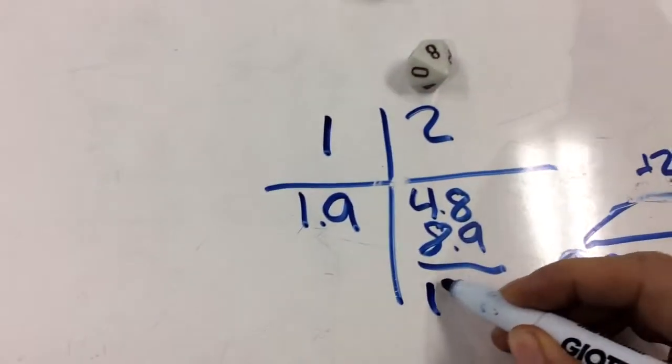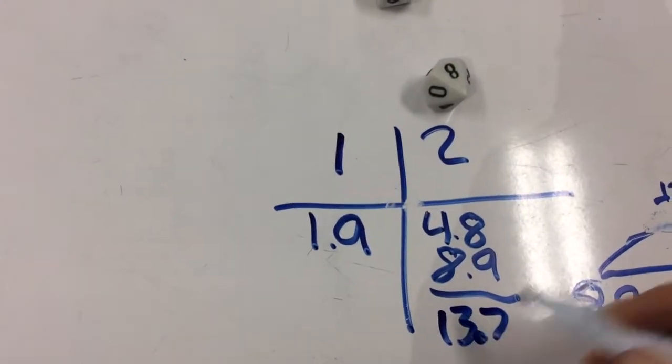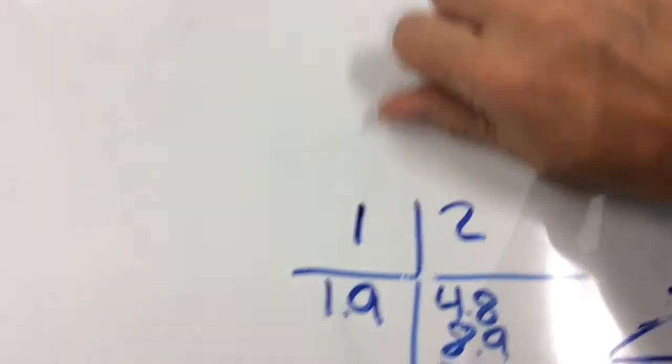Alright, so I'm at 13.7, which is really not very good. Because the object of the game is after three rounds to get as close to 10 as possible.